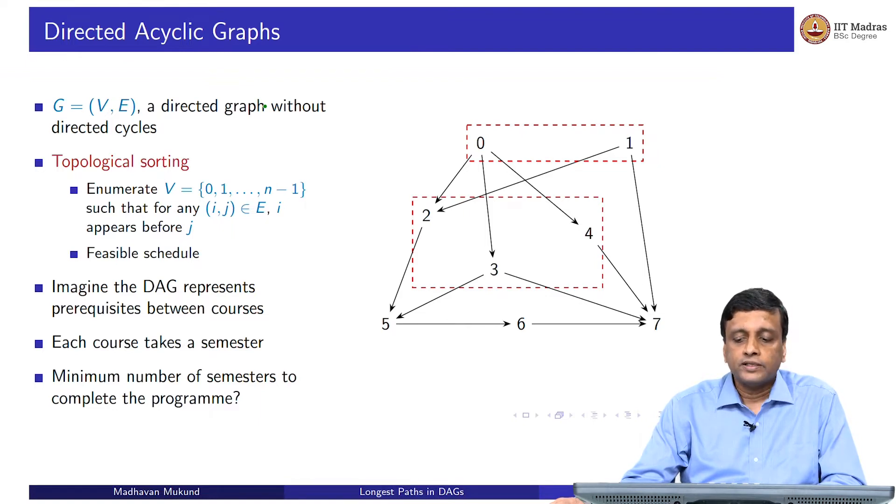Having done all of this, we still cannot take courses 6 and 7 because they depend on 5. So we have to do 5 alone in the next semester. Having done 5, then we can do 6 and then 7. So this set of 8 courses will actually take us 5 semesters to complete given these dependencies.